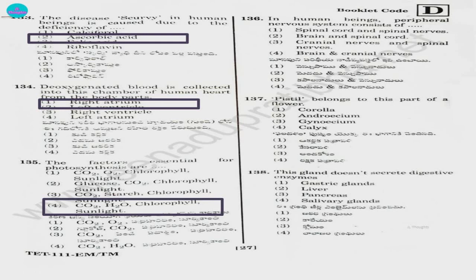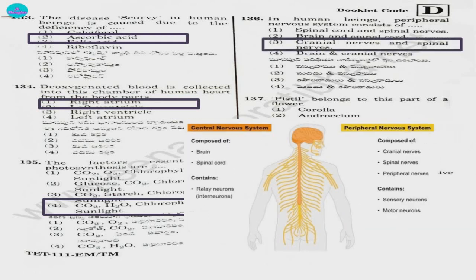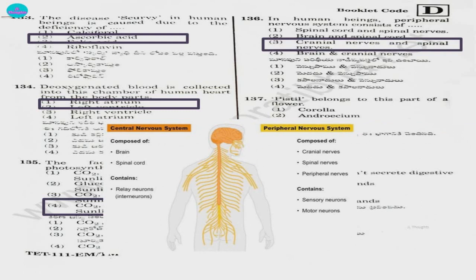Question 136. In human beings, the Peripheral Nervous System consists of — there are two systems: Central Nervous System and Peripheral Nervous System. Central Nervous System is composed of brain and spinal cord, whereas Peripheral Nervous System is composed of cranial nerves, spinal nerves and peripheral nerves. So the answer is cranial nerves and spinal nerves.